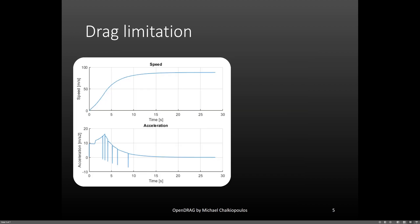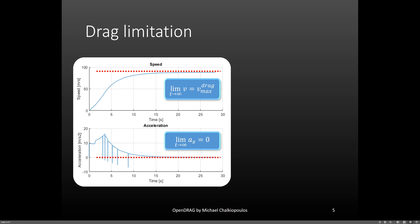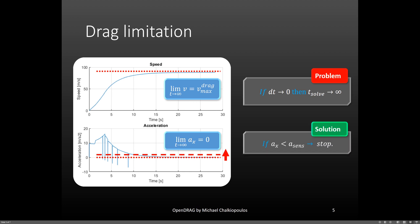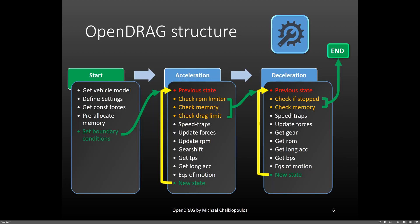Now, let's see what happens when we don't have enough power to hit the engine speed limiter at the end of the simulation. What I mean is that the vehicle has a gearing setting that will allow it to go faster, but the tractive force it can generate is less than the total drag force. In this situation, the limit of the velocity when the time approaches infinity is equal to the maximum drag velocity. At the same time, as time approaches infinity, the longitudinal acceleration approaches zero. This creates a problem: as we decrease the time step to increase our accuracy, the solver needs more and more time to see that the velocity does not change or that the acceleration has reached zero. The way we cope with this is by accepting a small value of the longitudinal acceleration as our new zero value. Programmatically, this is done by checking if the longitudinal acceleration has become smaller than the sensitivity we have set in the simulation settings. If it has, then we stop the simulation.